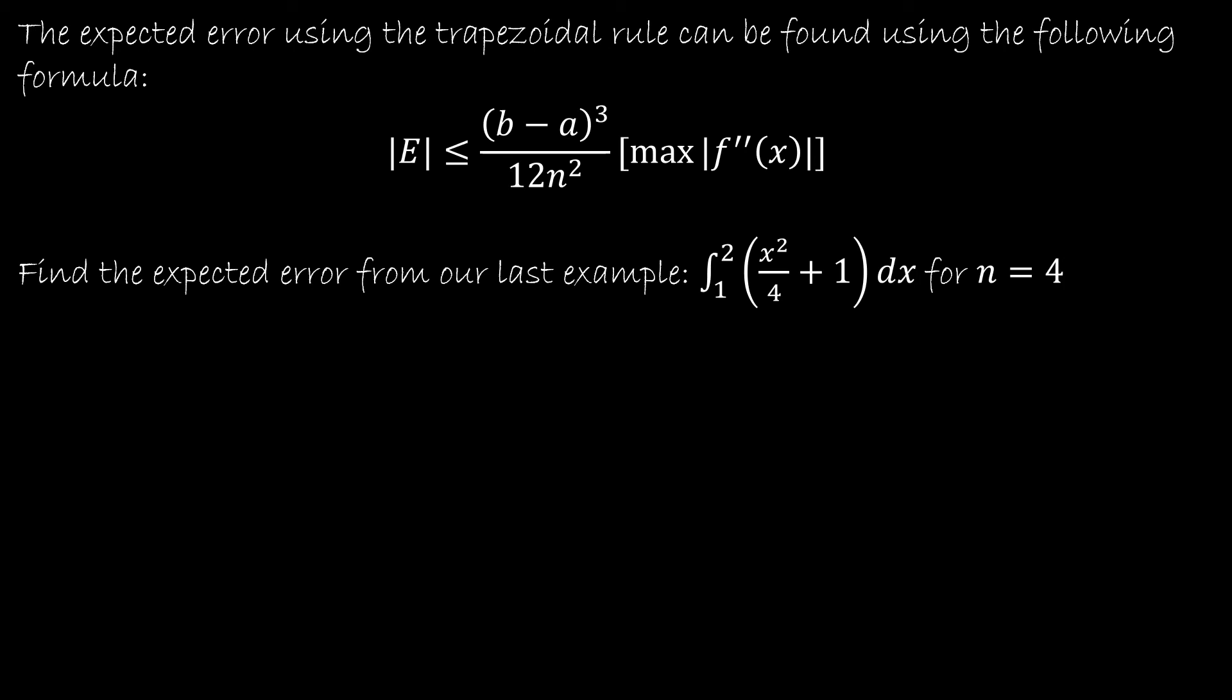In our last example, we just saw how close the actual value was to our estimated value using the trapezoidal rule. We actually have a formula that helps us to know exactly how much error we can expect. And notice here we have the absolute value of the error. So that means it's going to be within a certain amount on either side. We're going to take b minus a quantity cubed divided by 12n squared and then the maximum value of our second derivative of the function. So here's what I mean by that. If I take the absolute value of the error, b minus a in my last example was 2 minus 1 over 12 times n squared, so that would be in this case 4 squared. And then we have to think about our function.